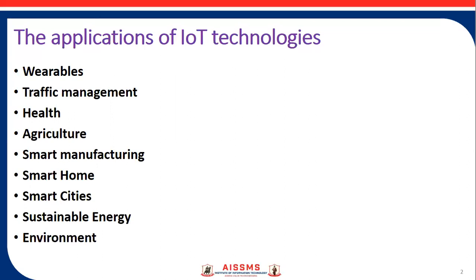Health is a major concern in society. For health, different types of sensors are now available — some sensors are directly injected into the human body for monitoring. You may have heard about pacemakers; a pacemaker can send data to a hospital database and they can track and manage you. Many health-oriented services can be provided using IoT technologies.